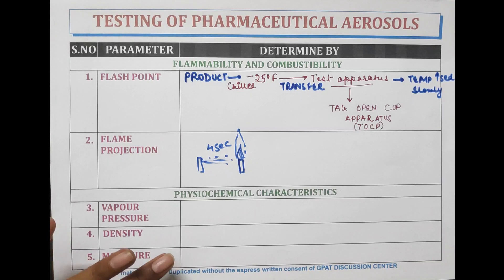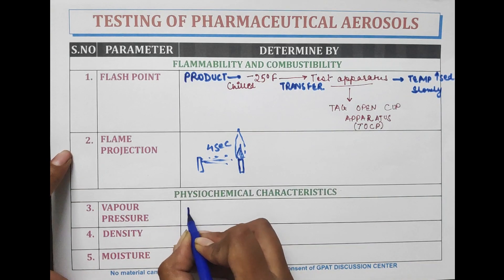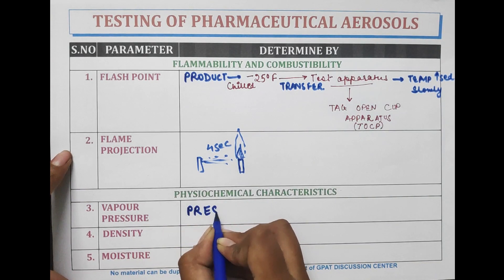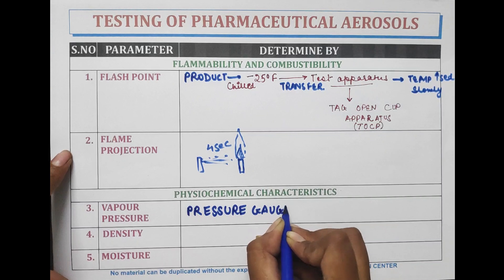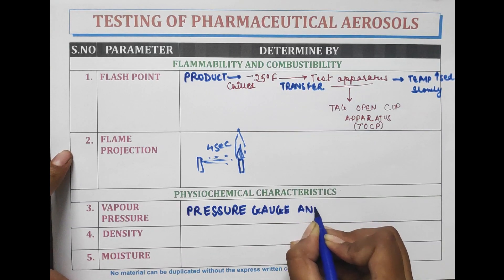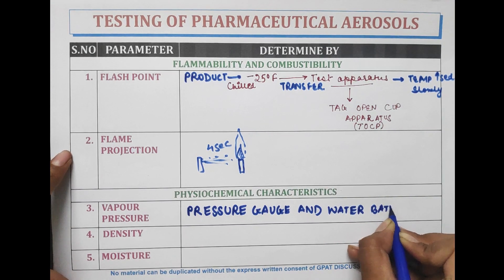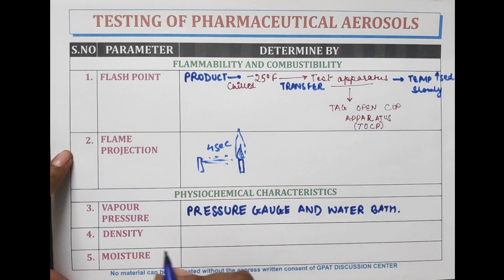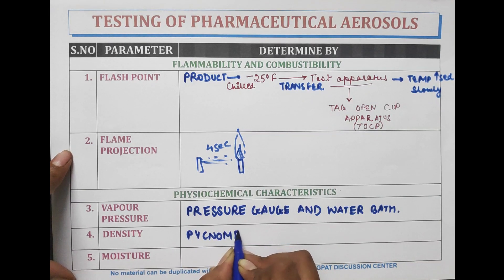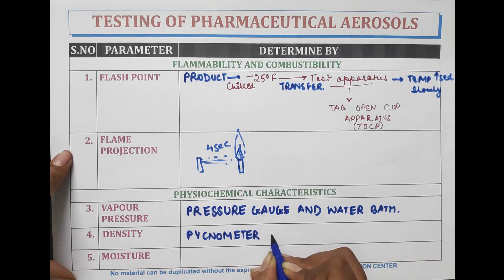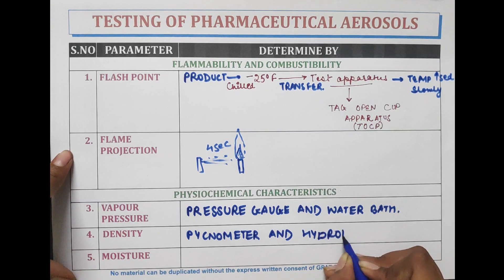Another evaluation is physicochemical characteristics. The first is vapor pressure, which is measured by a pressure gauge and by a water bath. Another physicochemical characteristic is density, which is measured by pycnometer and hydrometer.